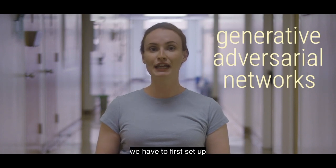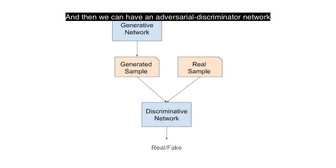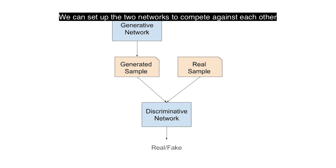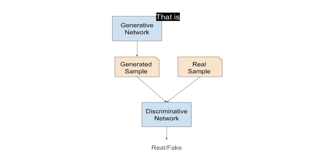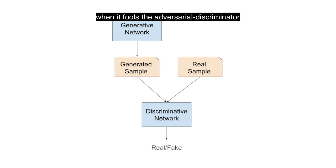To do so, we first set up a generative network making top-down guesses or imaginations of visual input. Then we can have an adversarial discriminator network, whose job is to tell if a visual representation is genuinely a real visual input or whether it was just made up by the generative network. We can set up the two networks to compete against each other — the discriminator gets a point if it catches the generative network making up an input, and the generative network gets a point when it fools the adversarial discriminator into believing that its output was real.